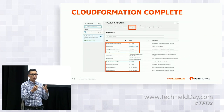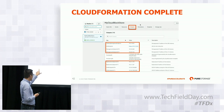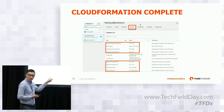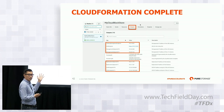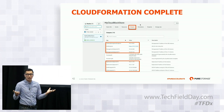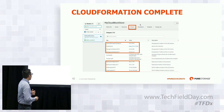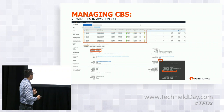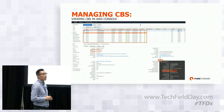It takes about 10 minutes to deploy. CloudFormation grabs all the resources it needs and configures them to your parameters. You're left with an output page containing everything you need to access Cloud Block Store — management IPs, replication IPs, and iSCSI IPs. At that point it's just like a FlashArray on-prem; you manage it the same exact way.